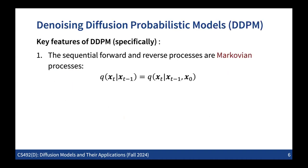For the denoising diffusion probabilistic model - DDPM specifically - there are more specific key aspects. The first is that we consider the forward and reverse processes as Markovian processes, which means that when we sample X_T, we only care about X_{T-1}, the latent variable sampled in the previous step. Every latent variable has dependencies only with the one sampled in the previous step. So in the conditional distribution for sampling X_T conditioned on X_{T-1} and X_0, we can drop X_0 because X_T only depends on X_{T-1}. This is only for the DDPM model - we'll see non-Markovian cases in the next lecture.